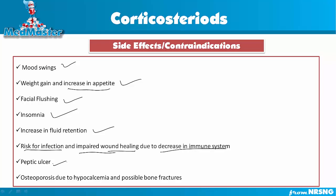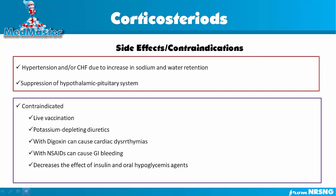Corticosteroids can cause peptic ulcer. This medication can cause osteoporosis because it decreases calcium absorption and can lead to possible bone fractures, which are more common in older patients. It can cause hypertension and congestive heart failure due to increased sodium and water retention. It can also suppress the hypothalamic-pituitary system through a negative feedback mechanism — if you're giving a patient steroid medication, the brain will sense enough corticosteroids are present and shut down the adrenal gland, which is suppression of the hypothalamic-pituitary axis.